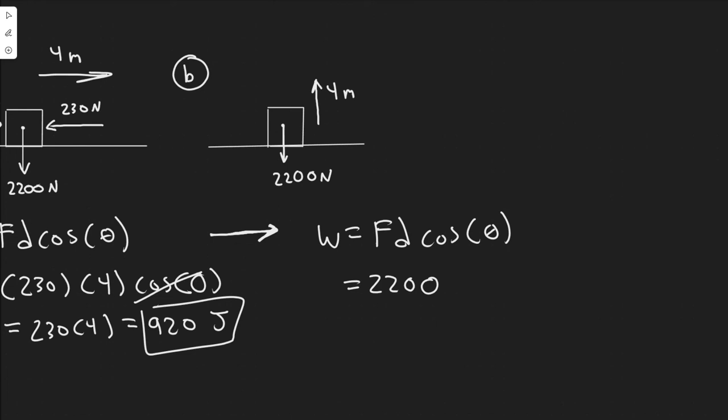Now the distance, again, is just 4 meters. And so the cosine of theta, so theta is the angle between the direction it goes and the force. So the force is being applied upwards, obviously, if we've got to move it upwards. And it's going up again, so they're right on top of each other, so we know it's zero.